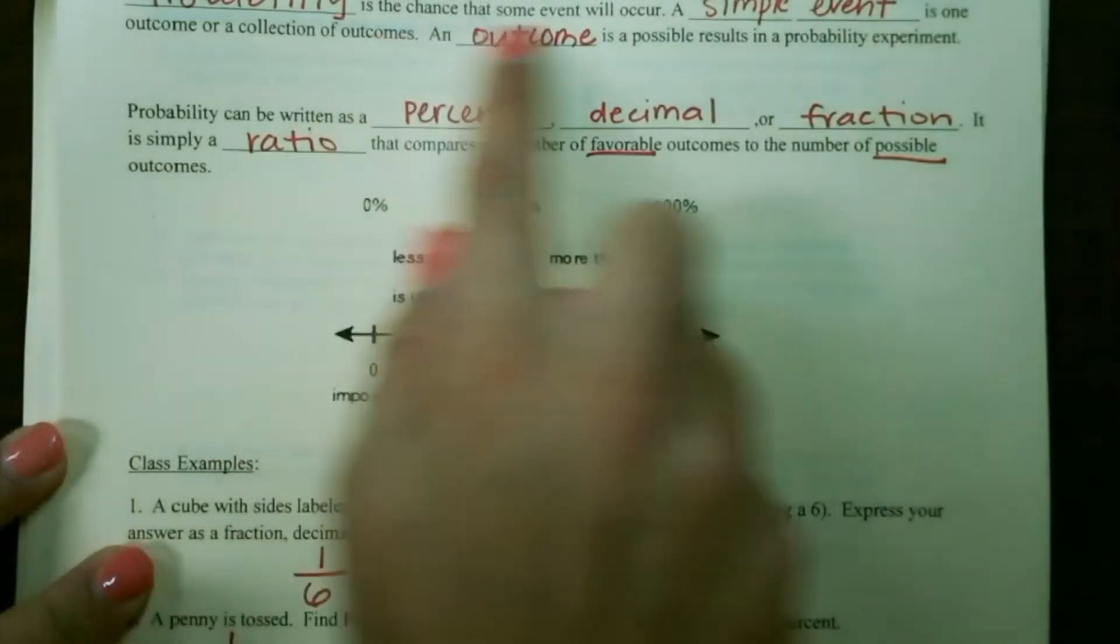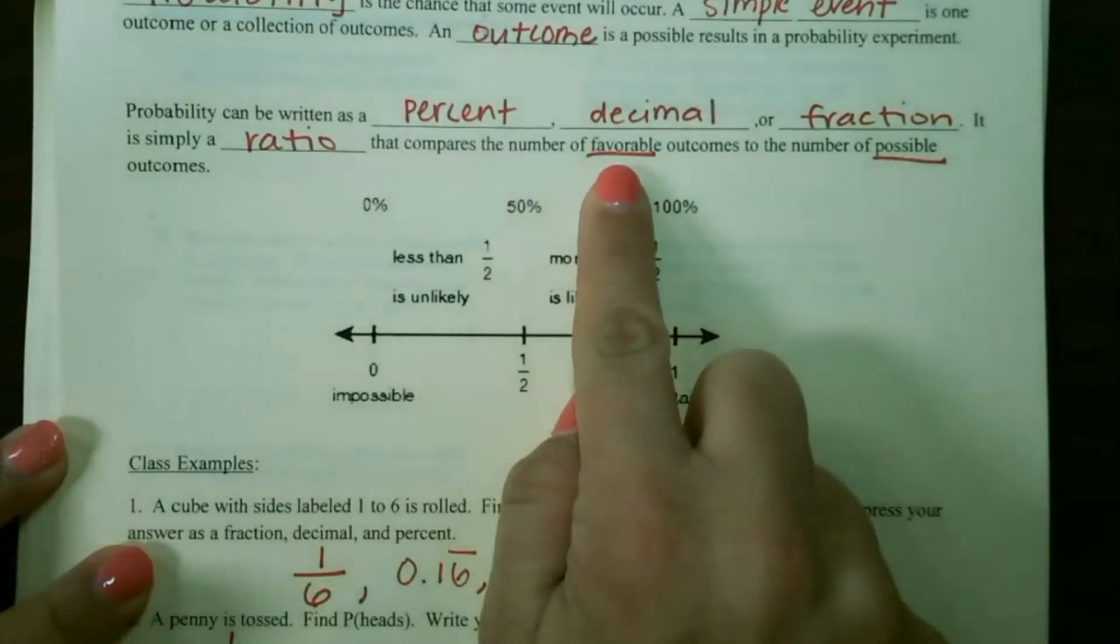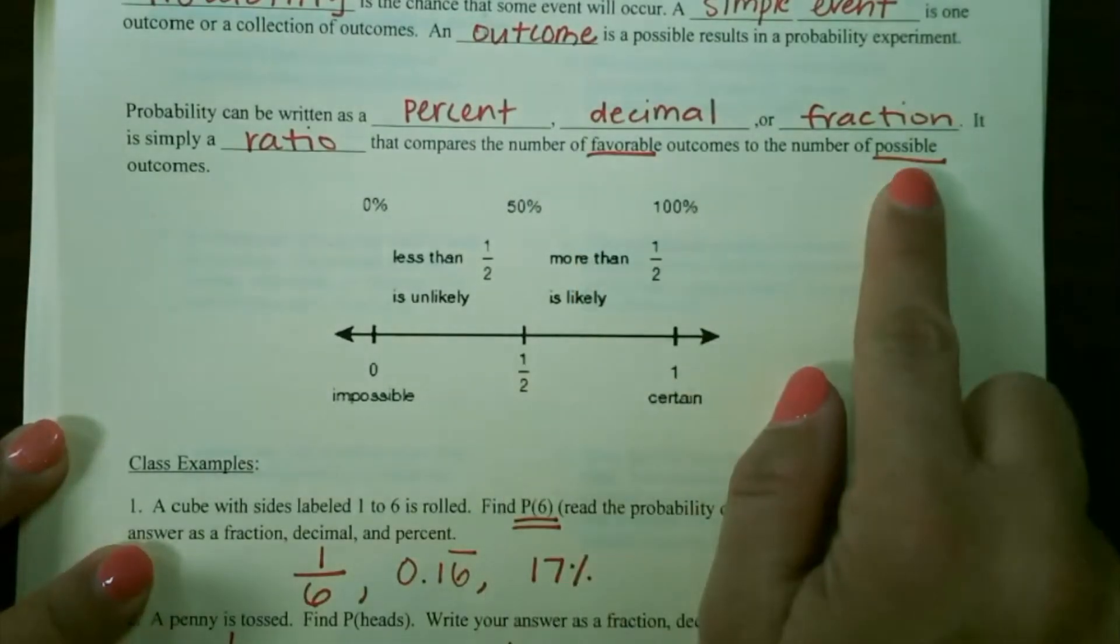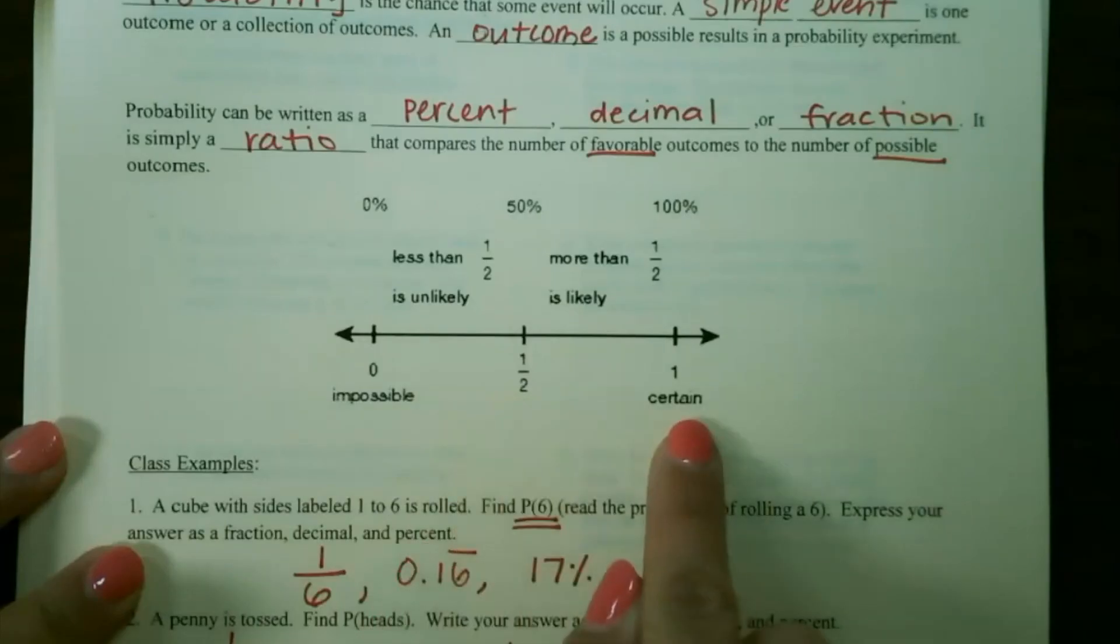So as a review, just remember that probability is the chance that something will occur. It's the number of favorable outcomes compared to the number of possible outcomes, where 0 is impossible, 1 half is a 50-50 chance or equally likely, and 1 is certain, with anything in between being unlikely or likely.